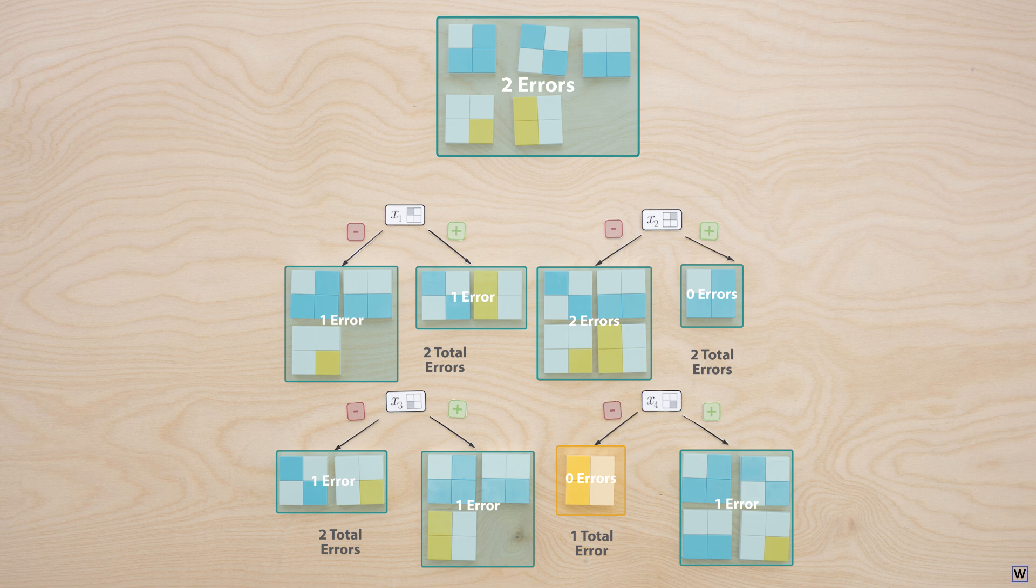So we now have a strategy. At each level of our tree, we'll split on the variable that misclassifies the fewest examples after labeling each node with the majority class label.